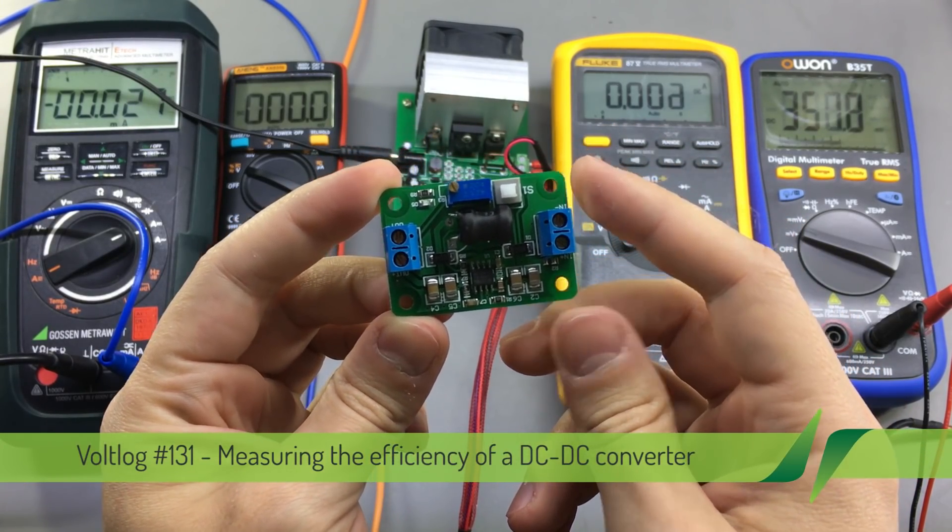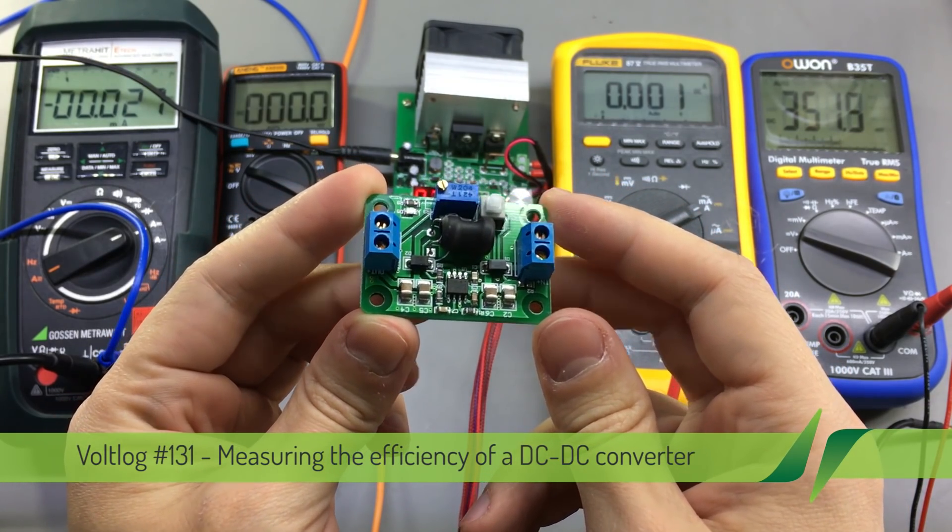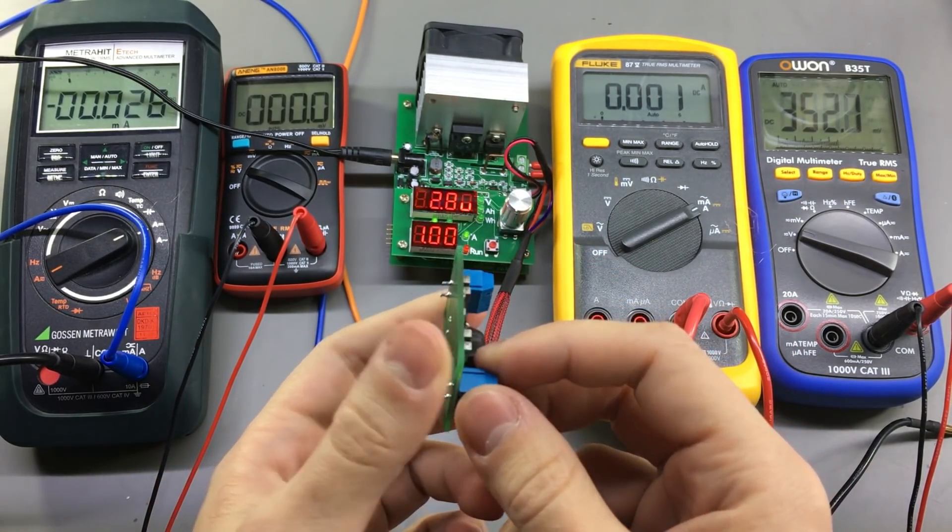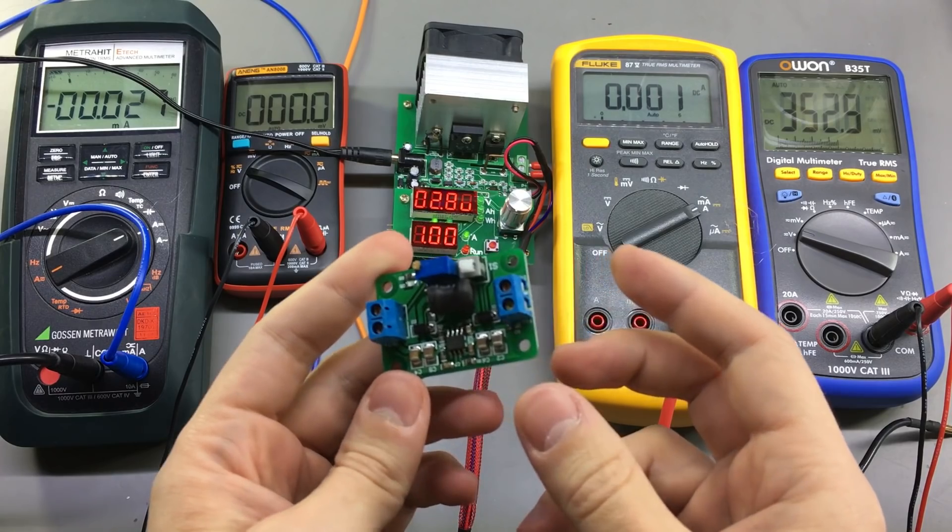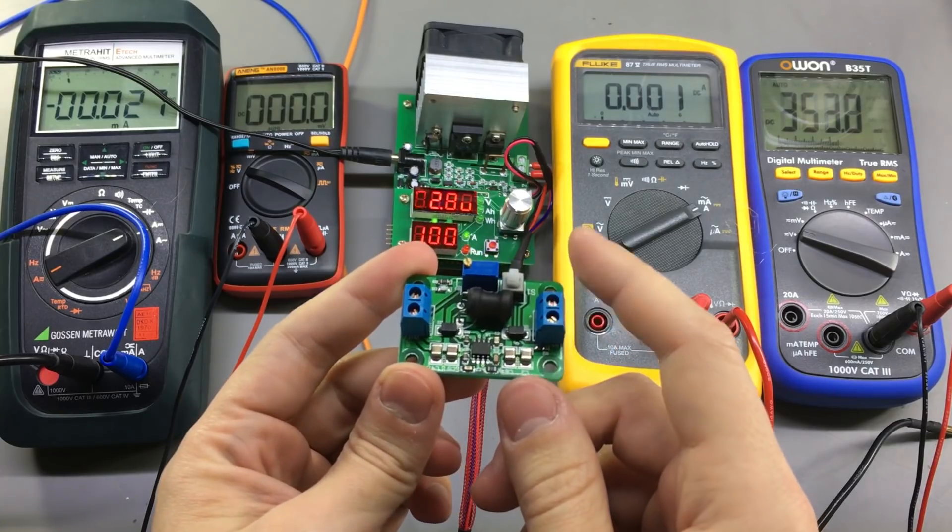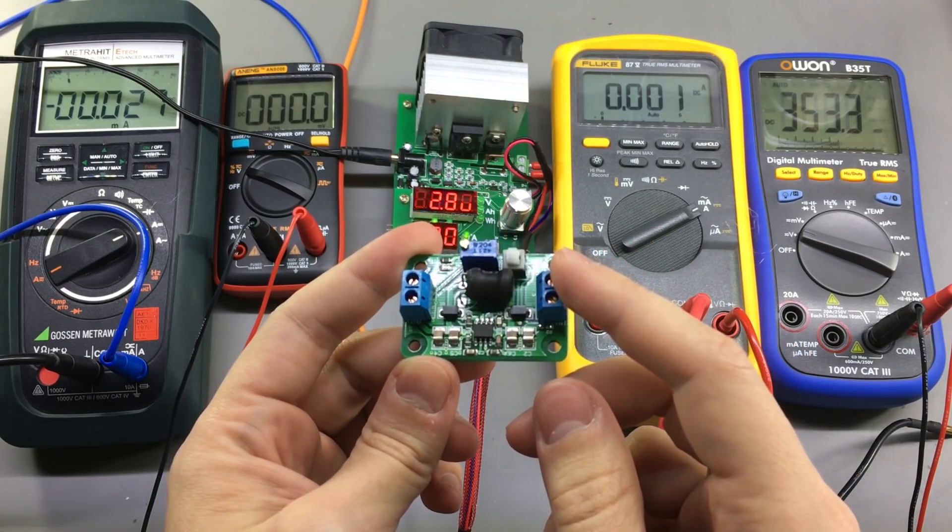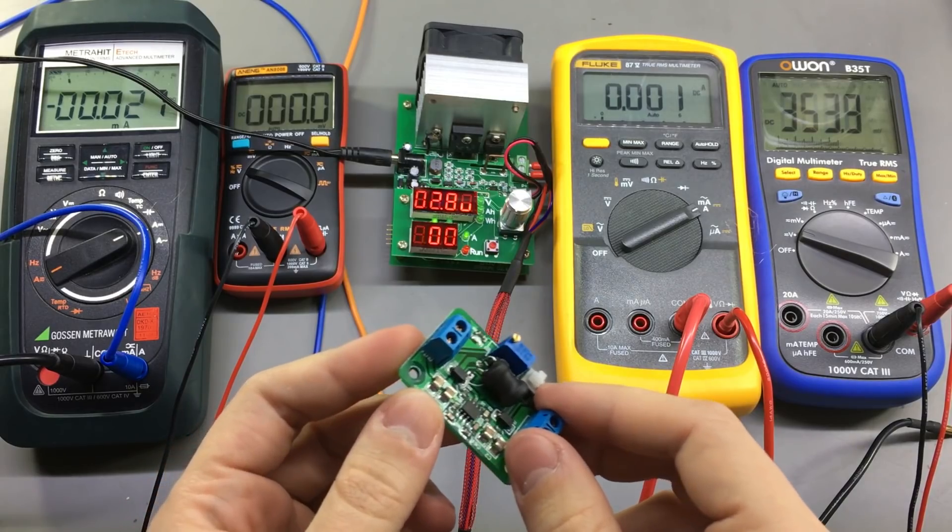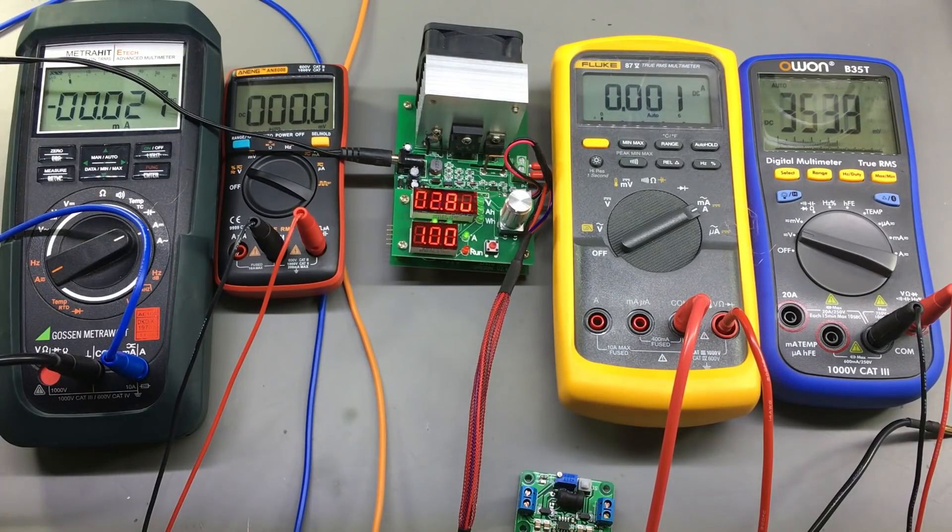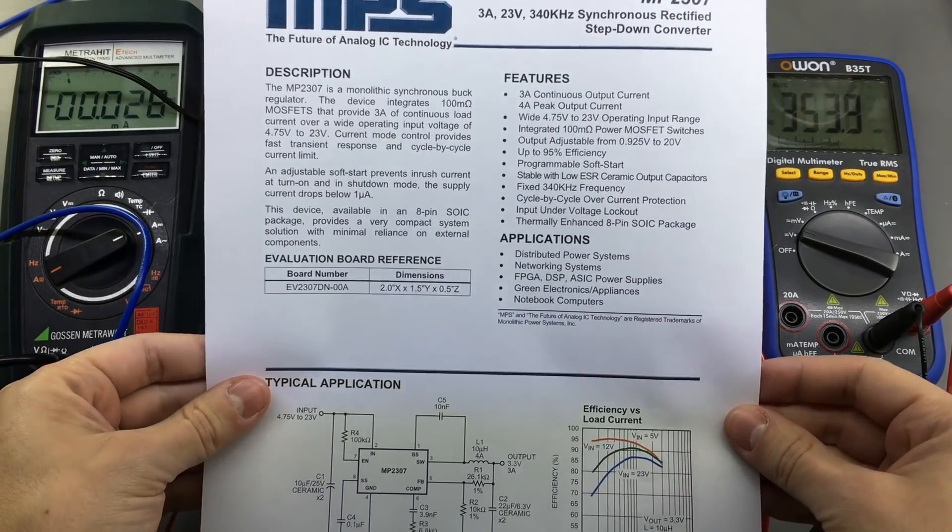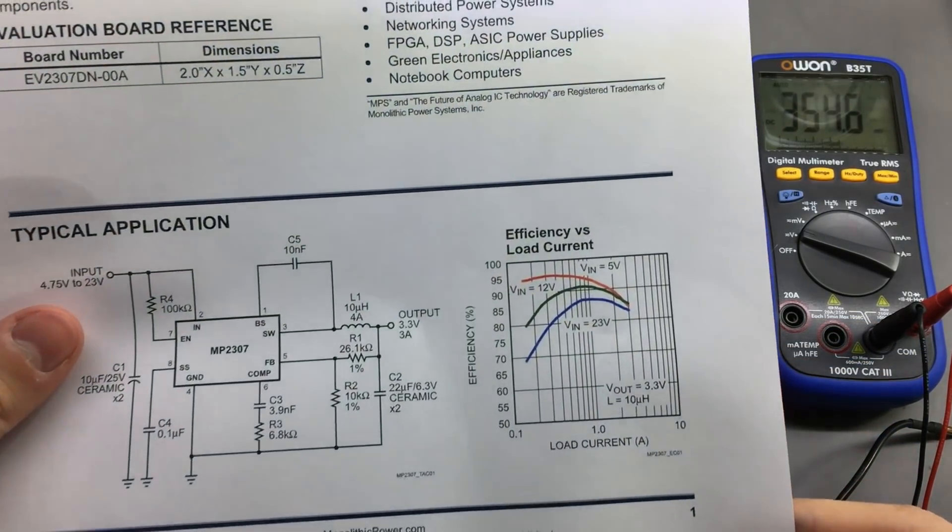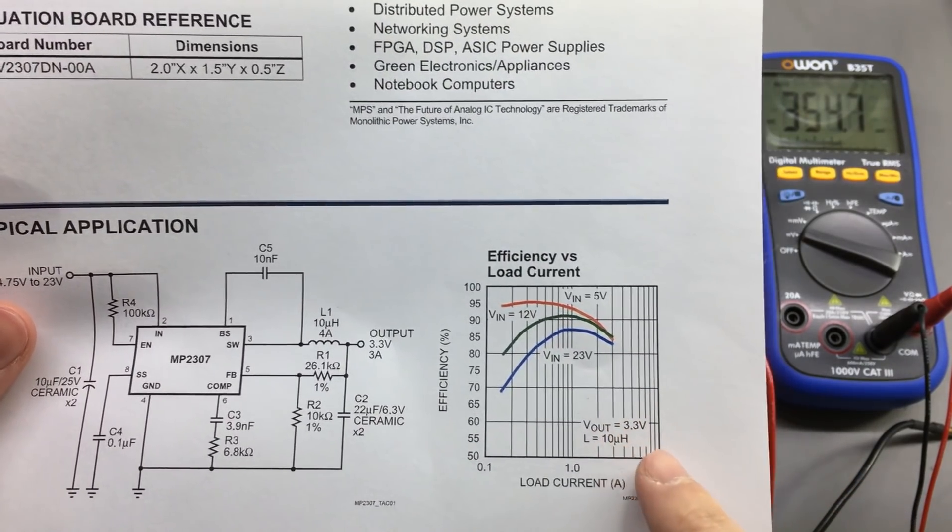This is the Rui Deng DC to DC converter with a claimed efficiency of 95%. A figure of 95% efficiency is not unheard of these days. Many DC to DC converters can achieve this with proper circuit design. This particular model uses the MP2307 converter chip manufactured by Monolithic Power. And if you take a look at their datasheet, we can immediately see where they got the 95% efficiency figure they advertise.